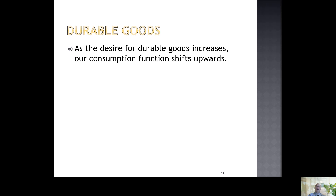Durable goods are things that, when purchased, tend to last for multiple years — generally five years or more. Examples include a washing machine, dishwasher, refrigerator, and car. As we have an increase in our desire for durable goods, the consumption function tends to increase. For example, increased demand for cars automatically means more gas, oil, tires, and everything else that comes with ownership. We don't just buy the car; we have to consider all the increased spending that goes with that durable good purchase.